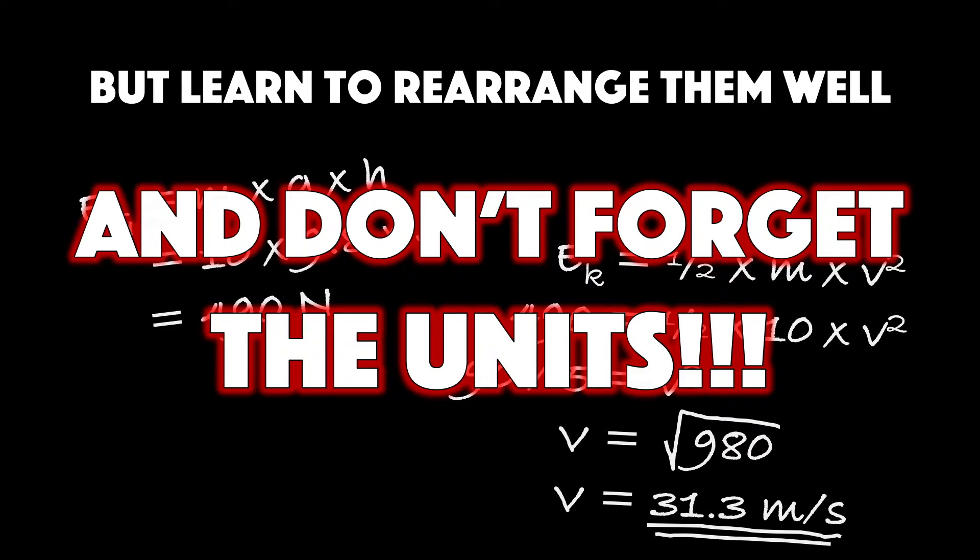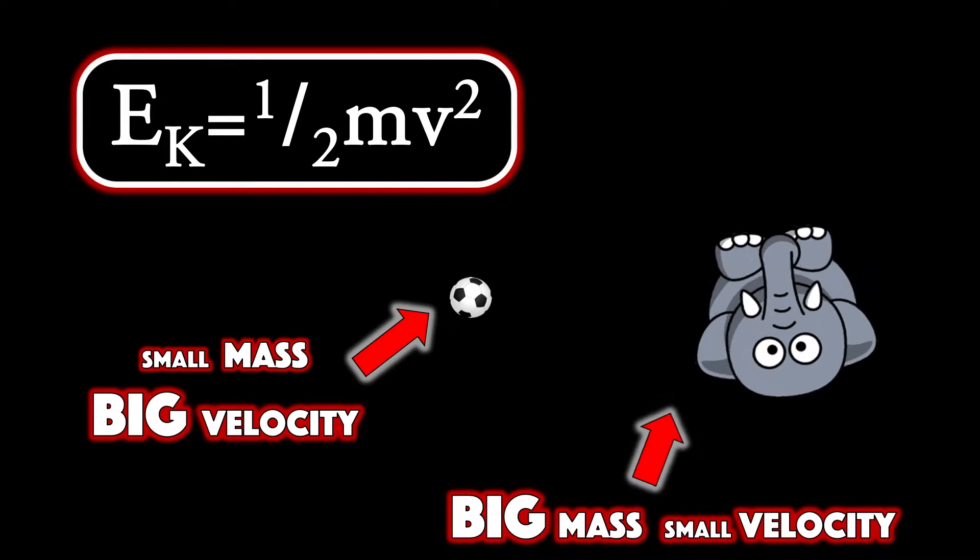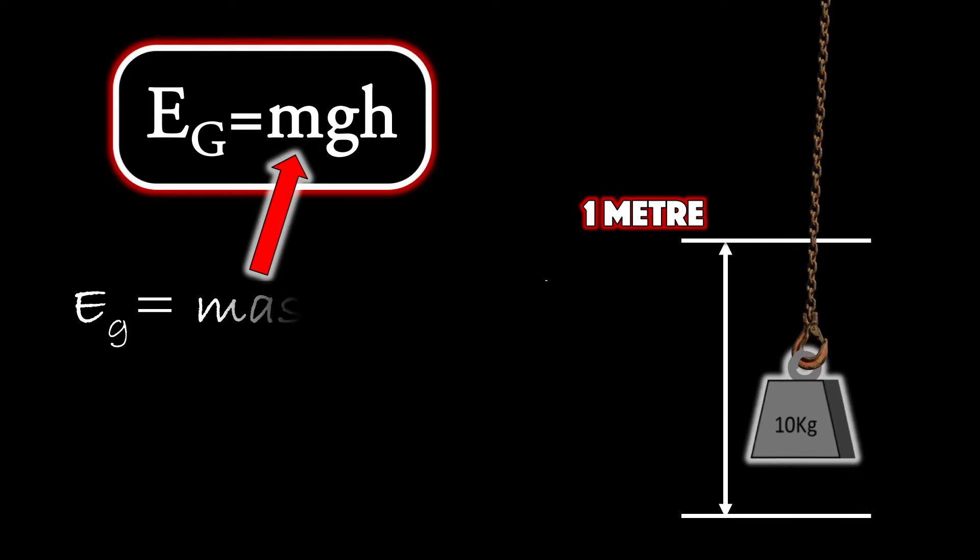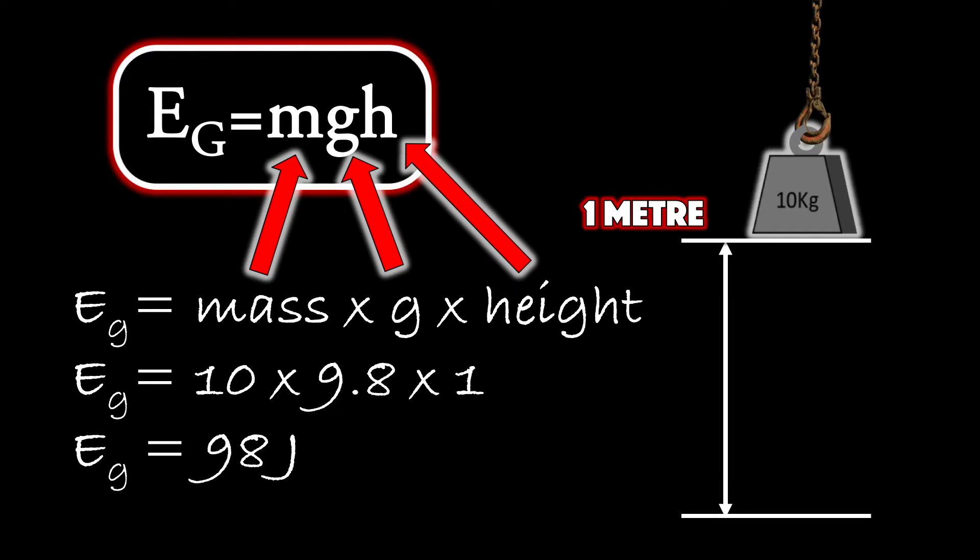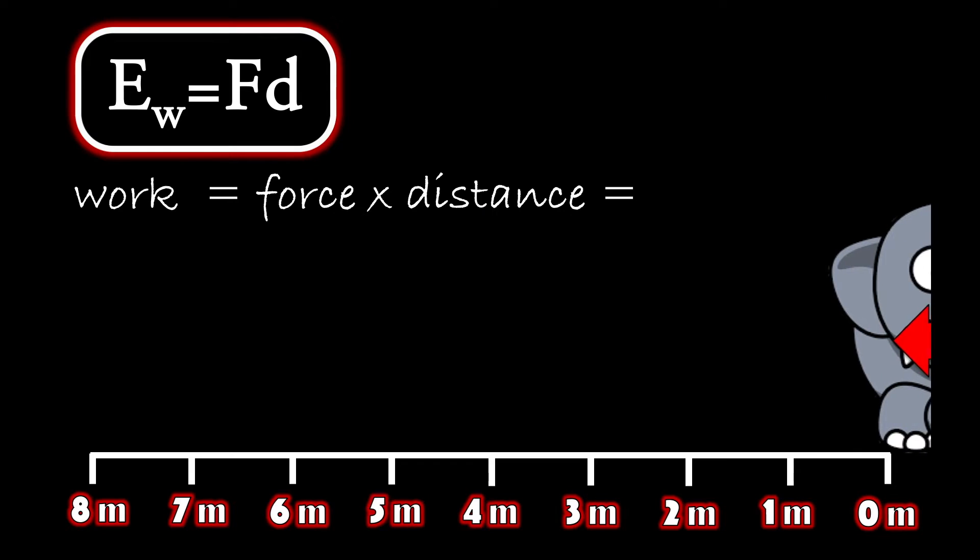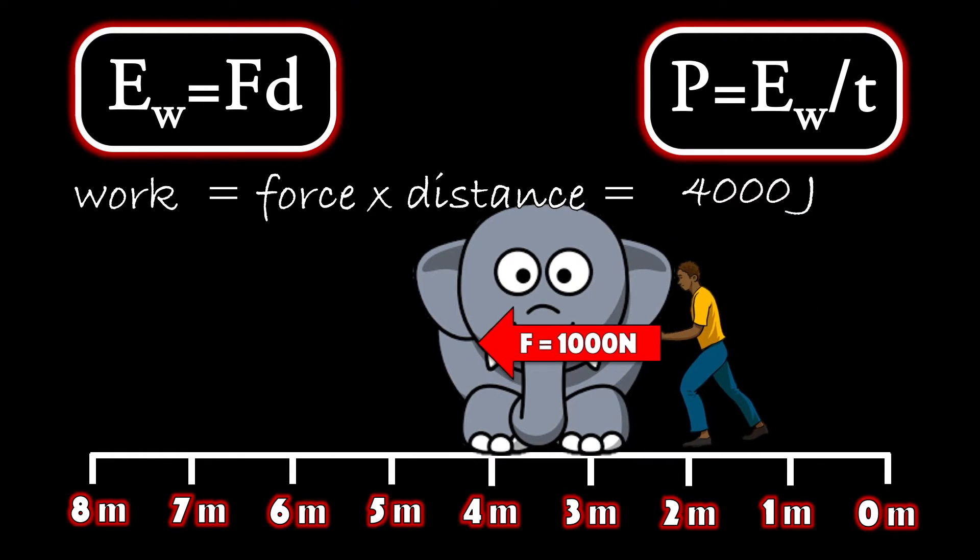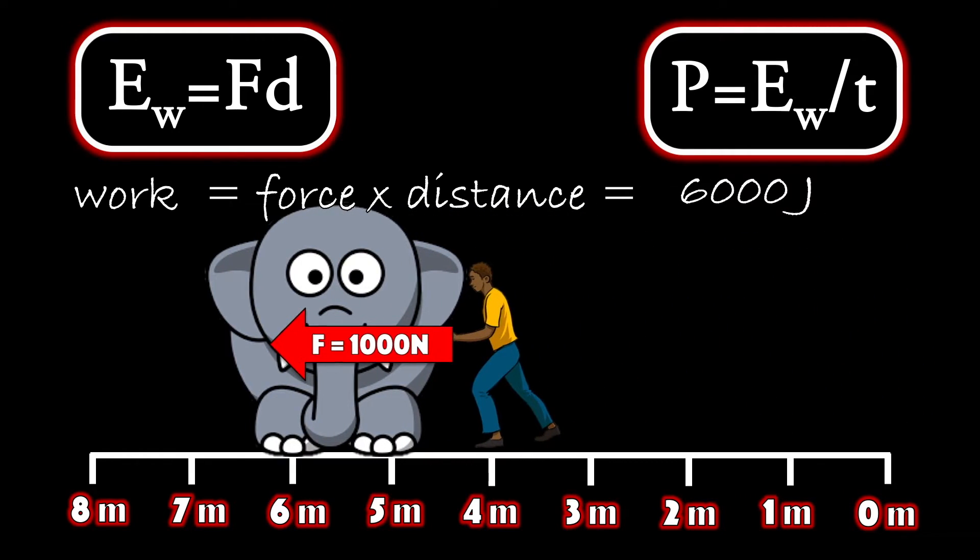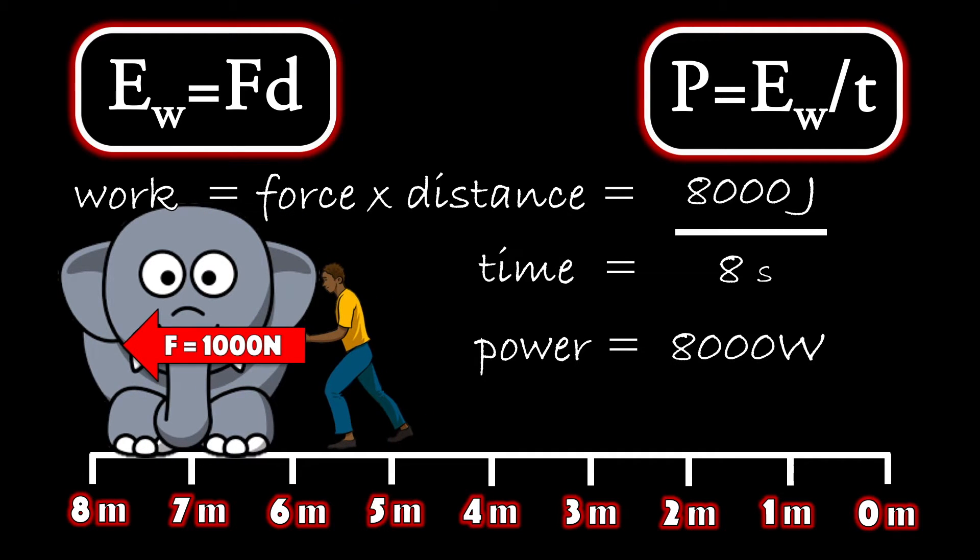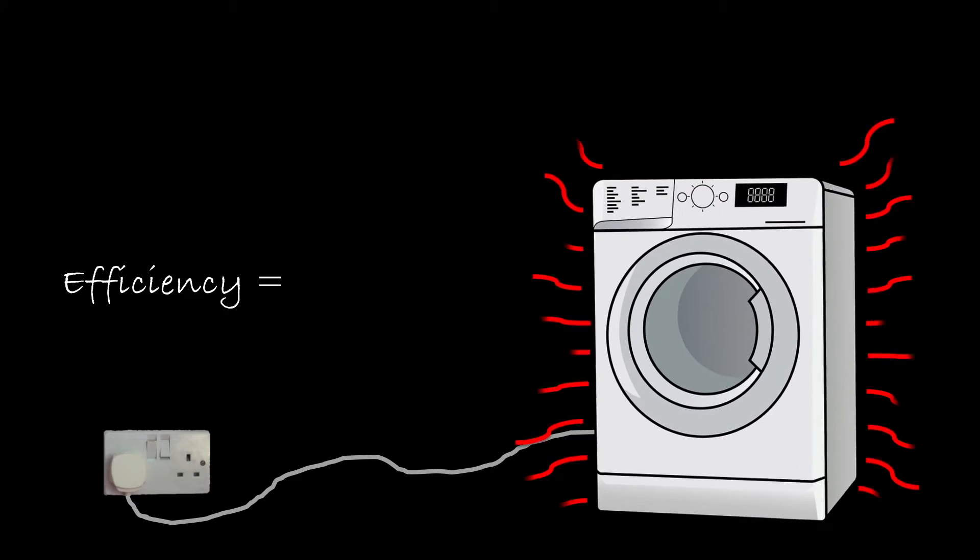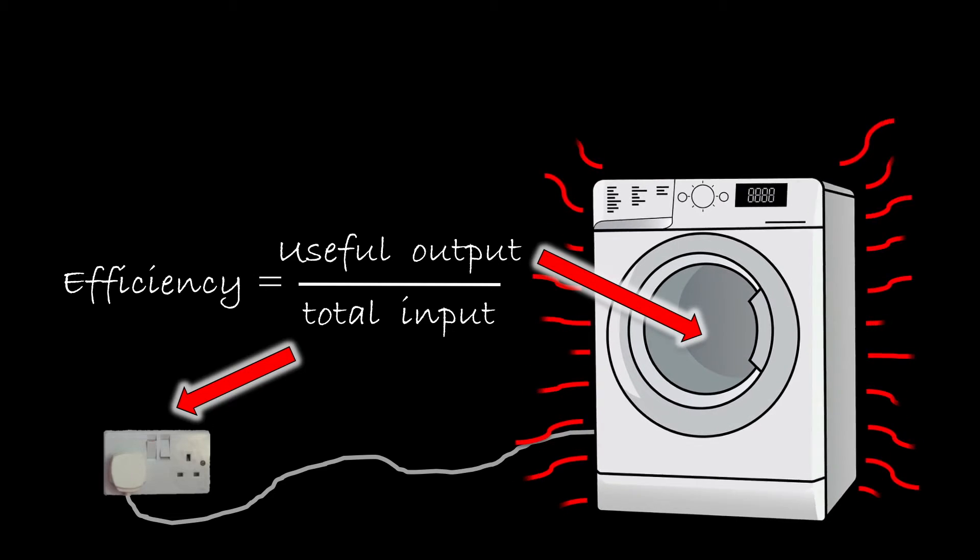don't forget the units. Energy stored kinetically is half times mv squared. Energy stored gravitationally is mg times change in height. Transferred energy or work done equals F times d. Power's the rate that it's transferred, work done over t. Each device wastes energy, its efficiency is defined by dividing useful output by the input you supply.